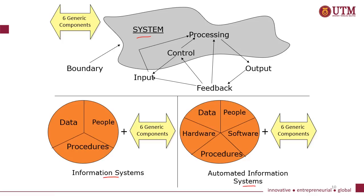There are six generic components in a system: boundary, input, control, processing, feedback, and output. Information systems include these six generic components plus data. Automated information systems include the six generic components plus the components of information systems, plus hardware and software.